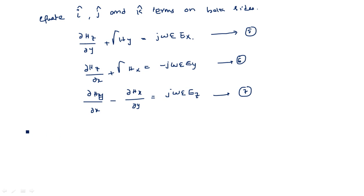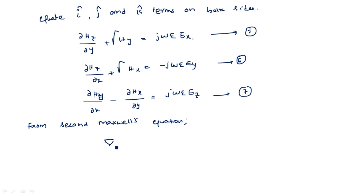Similarly, we take the second Maxwell's equation: Del × E = −jωμH. Notice it is the opposite case — the first equation had magnetic field indicating electric field, and now the electric field indicates magnetic field.